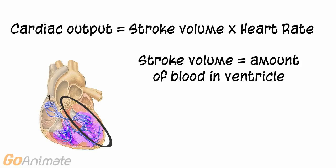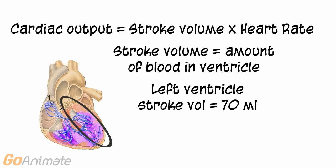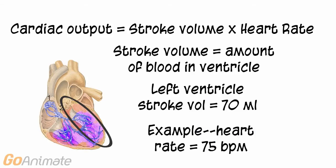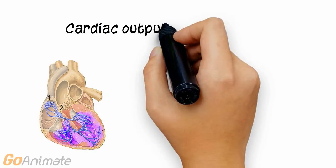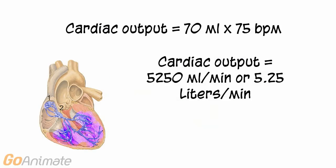The stroke volume is the amount of blood in one ventricle. For example, the stroke volume of the left ventricle is about 70 milliliters and an average heart rate is about 75 beats per minute. If we multiply the two numbers together, we get a cardiac output of 5,250 milliliters per minute, or 5.25 liters per minute. This means that 5.25 liters of blood moves through the left ventricle every minute.